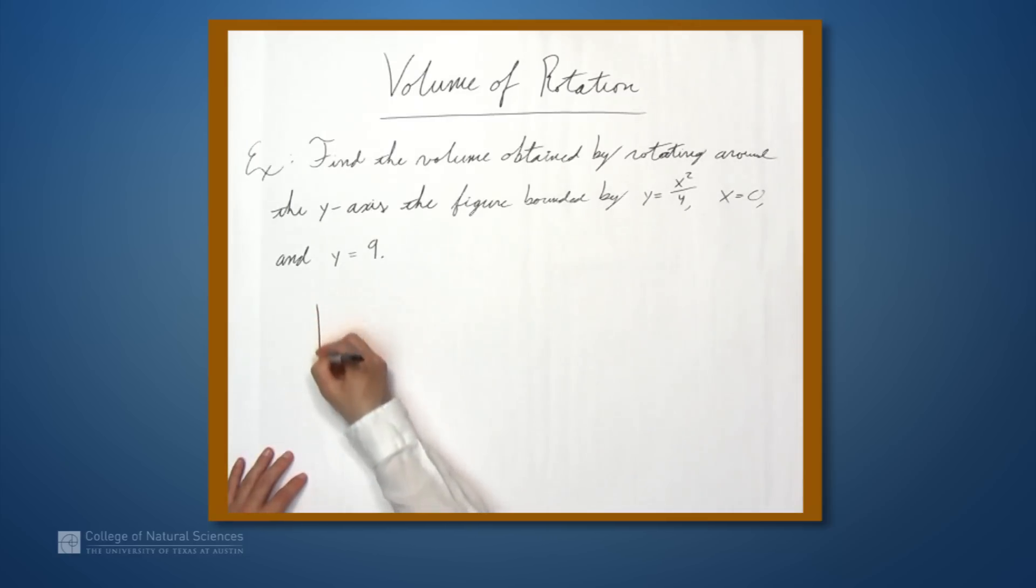As I usually say, we don't need to graph this, but when we can, it's worth doing. So y equals x squared over 4, it's a parabola, so it looks something like this.